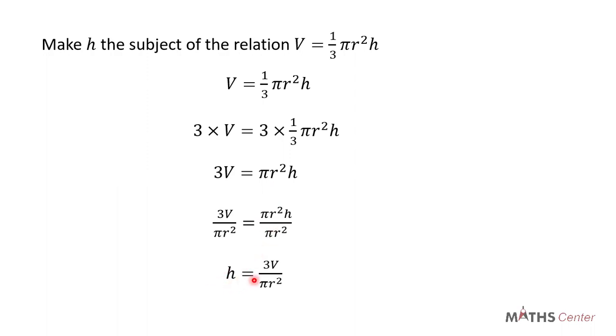And so h will be equal to 3V divided by πr². So when we make h the subject of this relation, we will have h = 3V/πr².